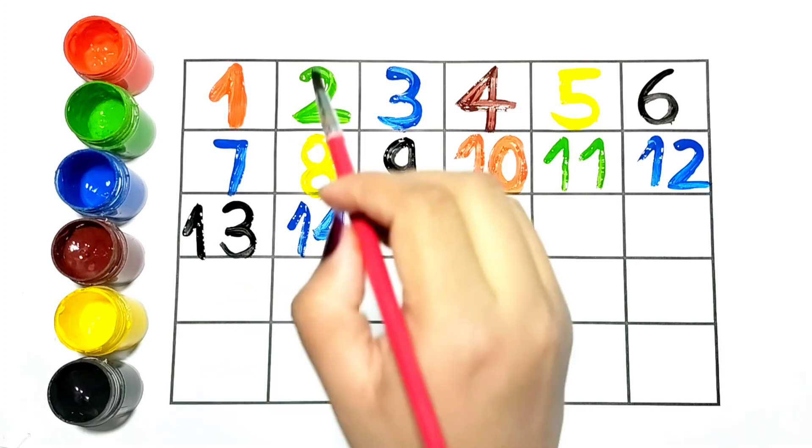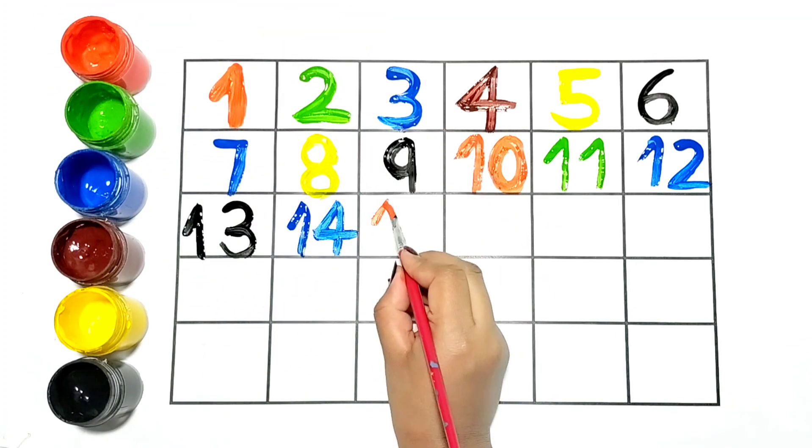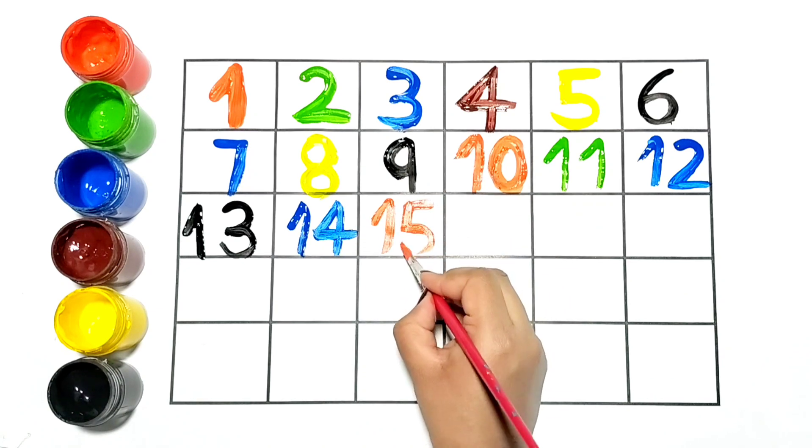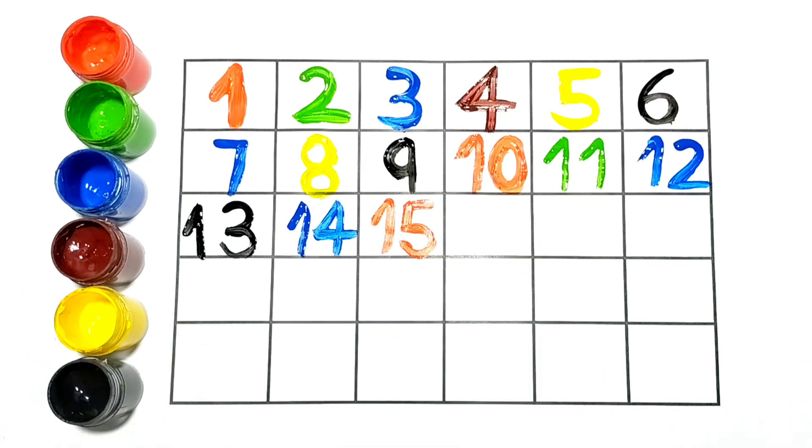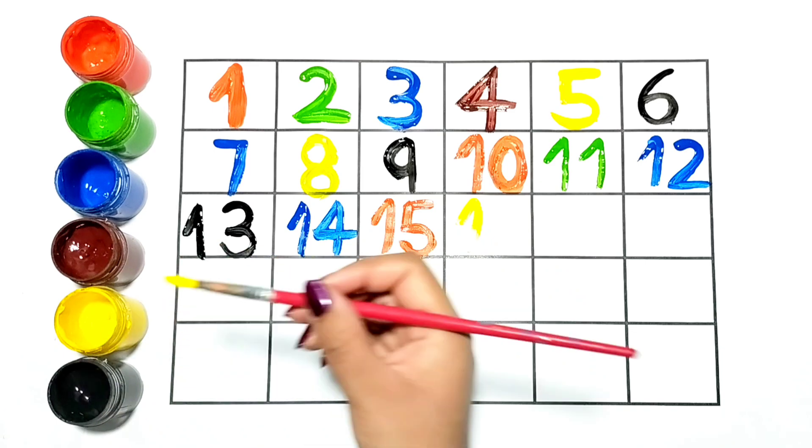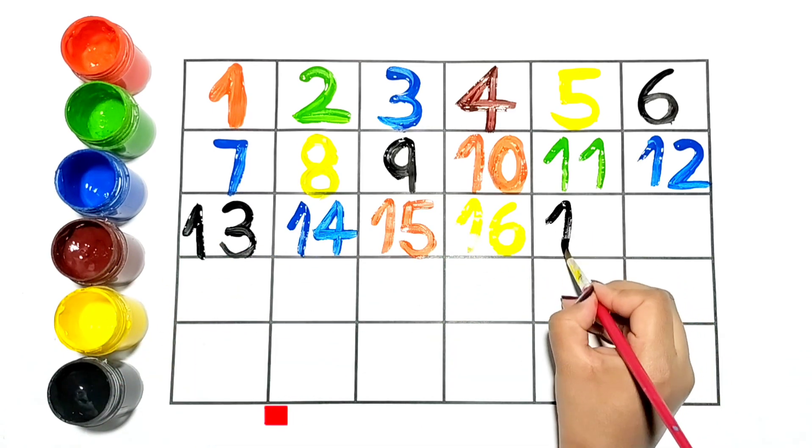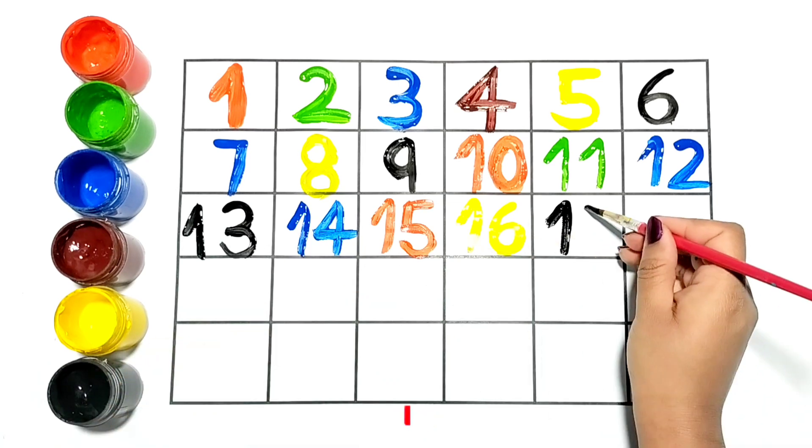Thirteen. Now I am writing 15. This is number 15, it is in orange color. I am writing 16 with yellow color. Next number is 17, black color.